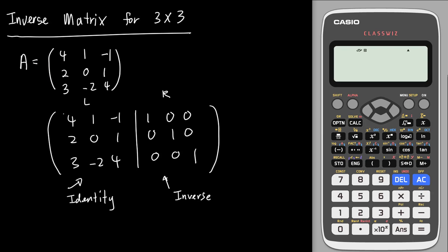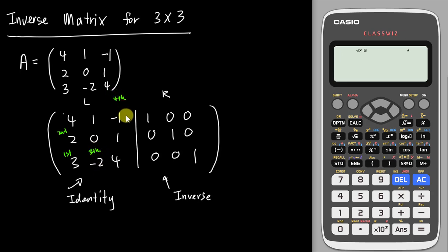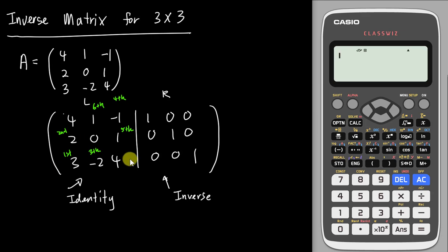When I do the row operations, I will follow this sequence so that it's easier. First I will change this position into 0, then this one into 0, then this one — negative 2 — into 0, then negative 1 into 0, then this 1 into 0. Later when I do a row operation, the position numbers will all change when I multiply, minus, or add.